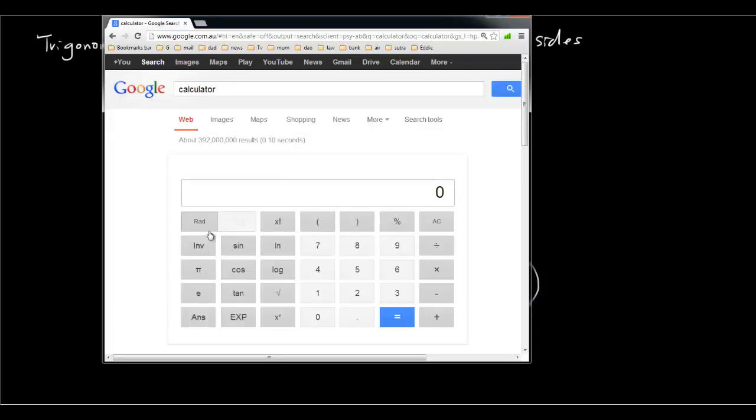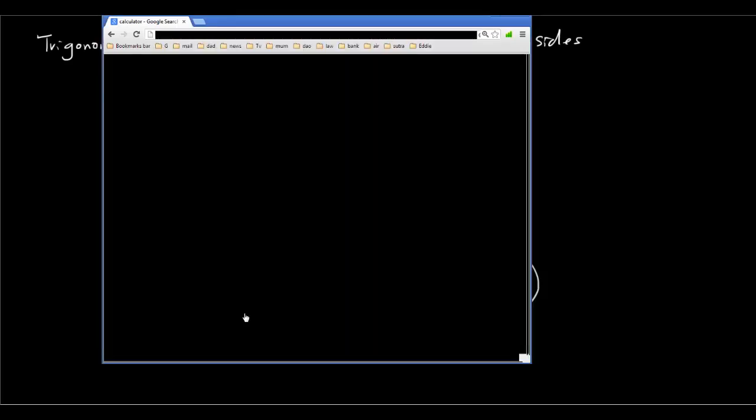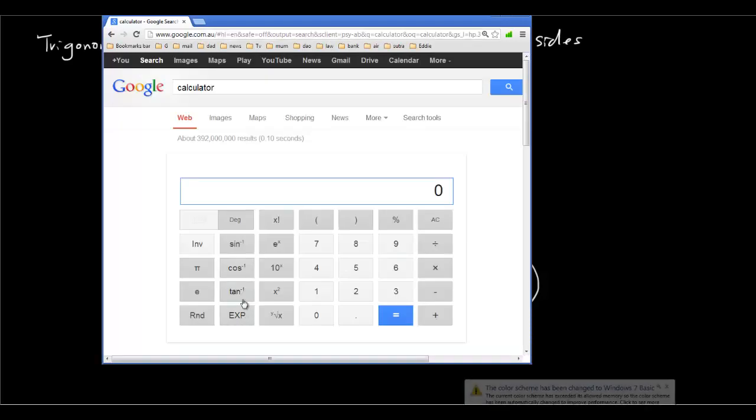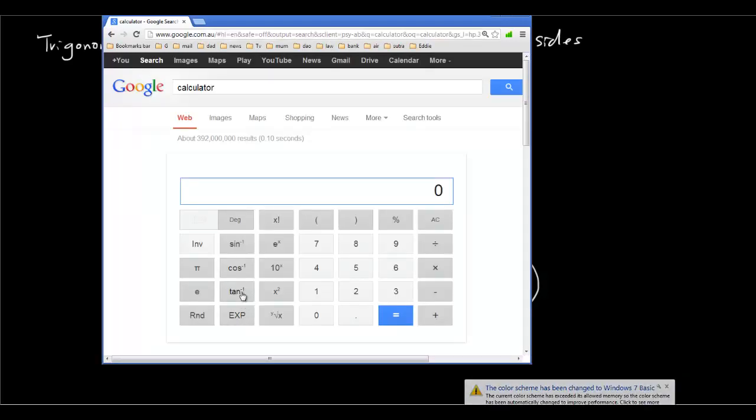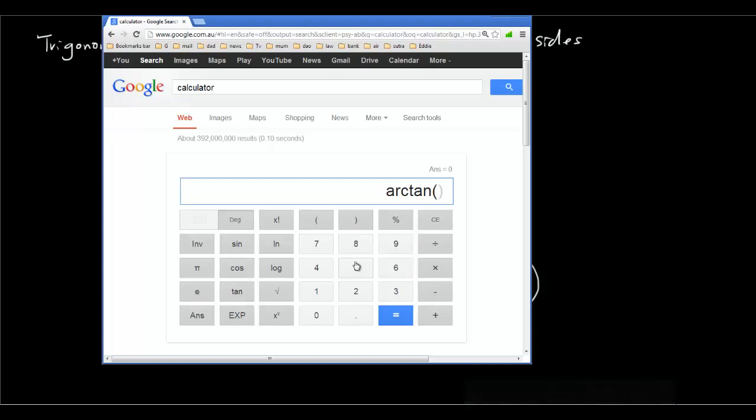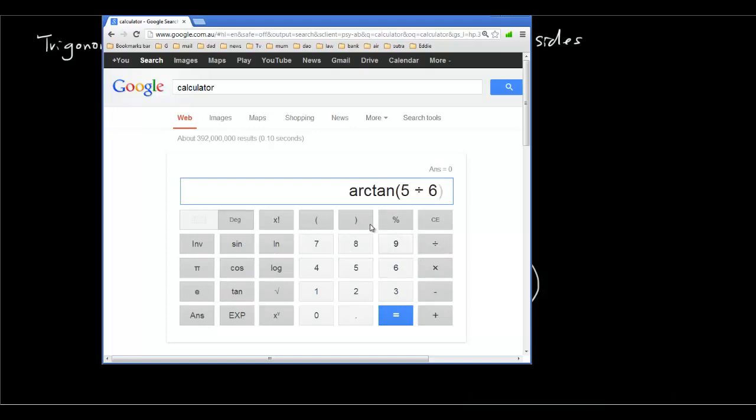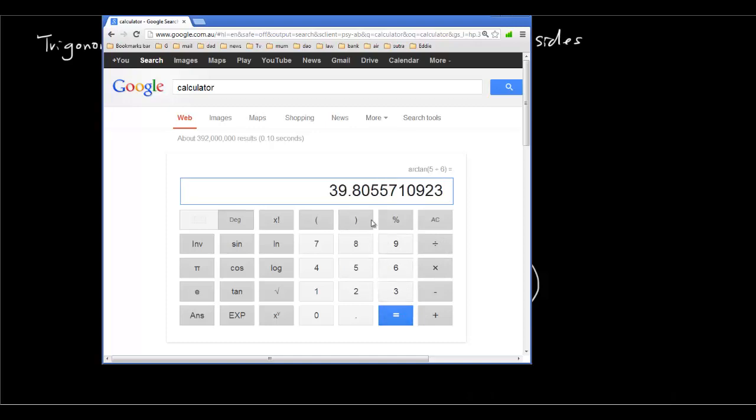So on the calculator, you need to make sure that your calculator says degrees. And you are going to put in inverse tangent bracket 5 over 6 bracket equals. And you can see that the answer is 39.8 degrees.